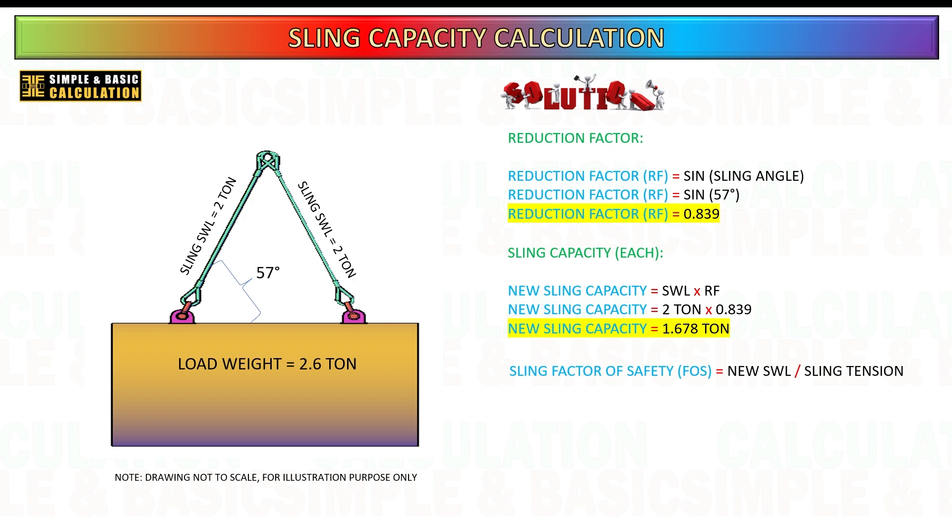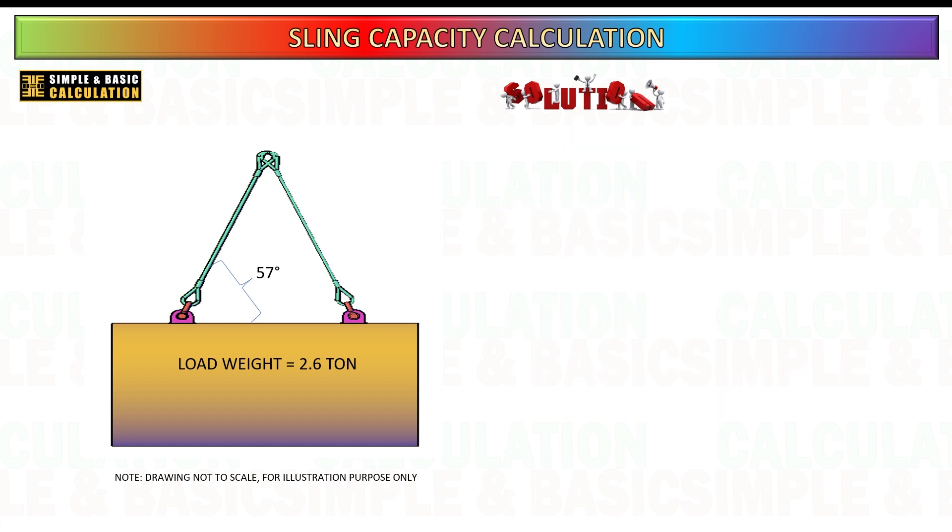Once you have calculated the new safe working load of the sling based on the reduction factor, the next step is to compute the factor of safety for the sling. This method mirrors the approach discussed in the previous slide. Calculate the factor of safety, FOS. The factor of safety is determined by dividing the new SWL of the sling by the actual load or tension that the sling is expected to handle. The formula for calculating the FOS is...